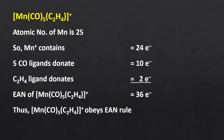The charge on this complex is +1. So, 24 electrons from manganese and 10 from 5 carbonyl ligands. The sum of these electrons is 34. Likewise, in the previous complex, alkyne will act as a 2 electron donor to make this complex stable, giving an EAN of 36.